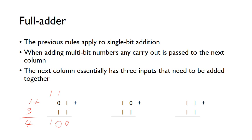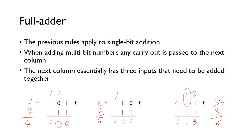Another example: zero and one gives one, and one and one gives zero with a carry into that column — that's two plus three equals five, which is correct. In the final example, one and one gives zero with a carry, then adding those bits with the carry gives us three plus three equals six, confirming the multi-bit addition process.